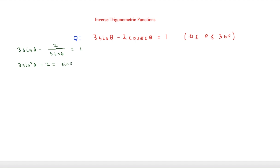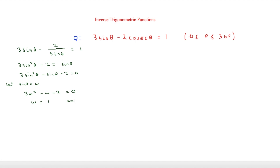You may be able to see a quadratic equation forming. In standard form it becomes 3 sine squared theta minus sine theta minus 2 equals 0. To make it easier to factorise, let w equal sine theta, giving 3w squared minus w minus 2 equals 0. Factorising this, we get w equals 1 and w equals minus two thirds.